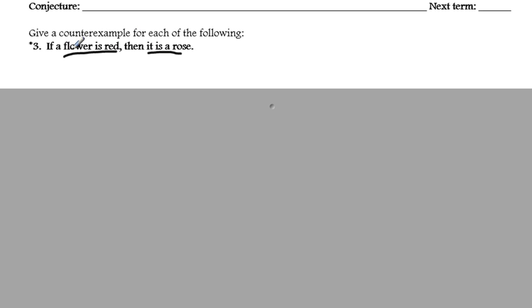So, it's just a simple example to prove that this hypothesis and conclusion is not always true. So, we have to find a flower that is red that doesn't mean it's a rose. I don't know a whole bunch of flowers, but hopefully you can come up with a flower that's red, like a tulip. So, if a flower is red, it doesn't necessarily mean it's a rose. So, my counterexample is a tulip.